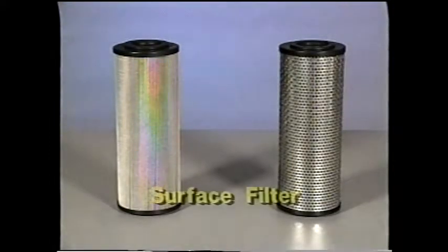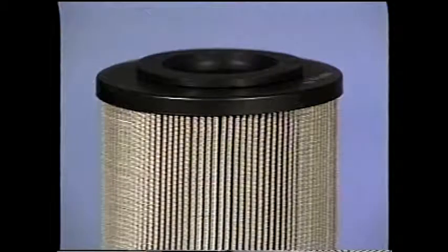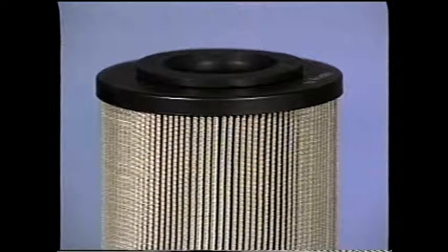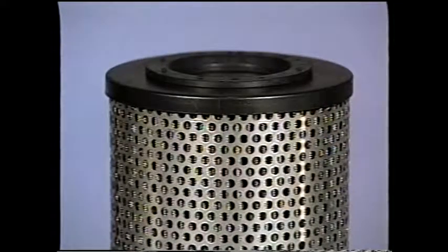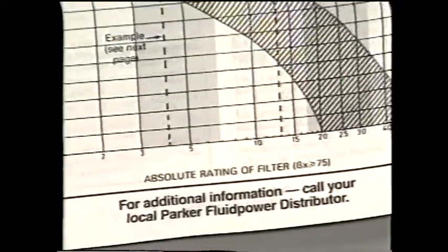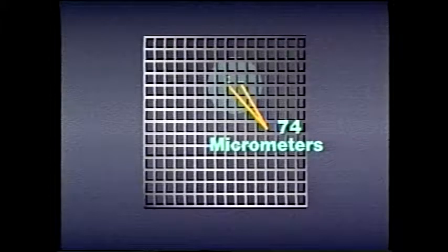The second type of filter, the surface filter, works like a kitchen strainer. It's a wire mesh or perforated metal sheet through which the hydraulic fluid passes. Wire mesh is similar to the screen wire used on your screen door at home, except it's usually made of bronze or stainless steel. Perforated metal is simply a sheet of metal with holes punched through it. Surface filters have absolute ratings which indicate the diameter of the largest round particle which will pass through the filter.